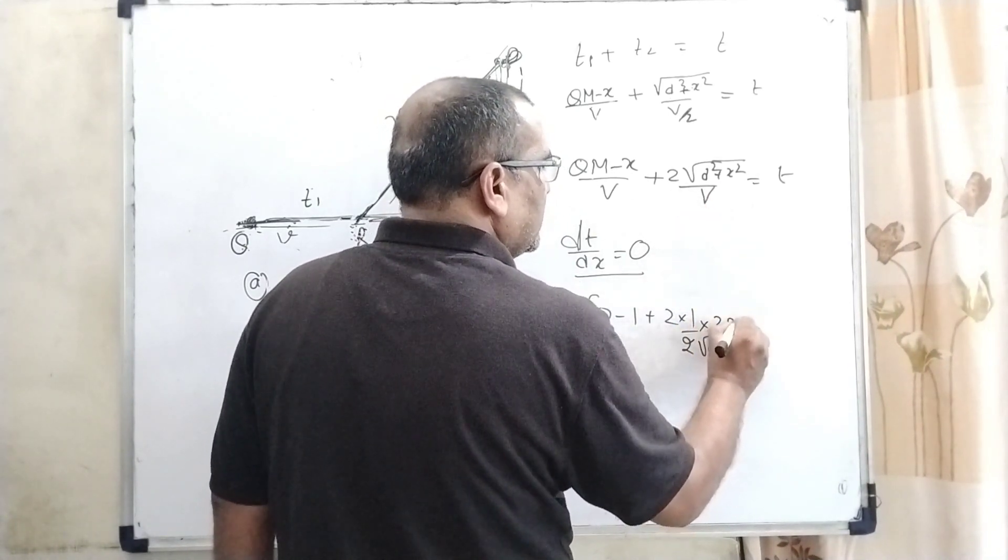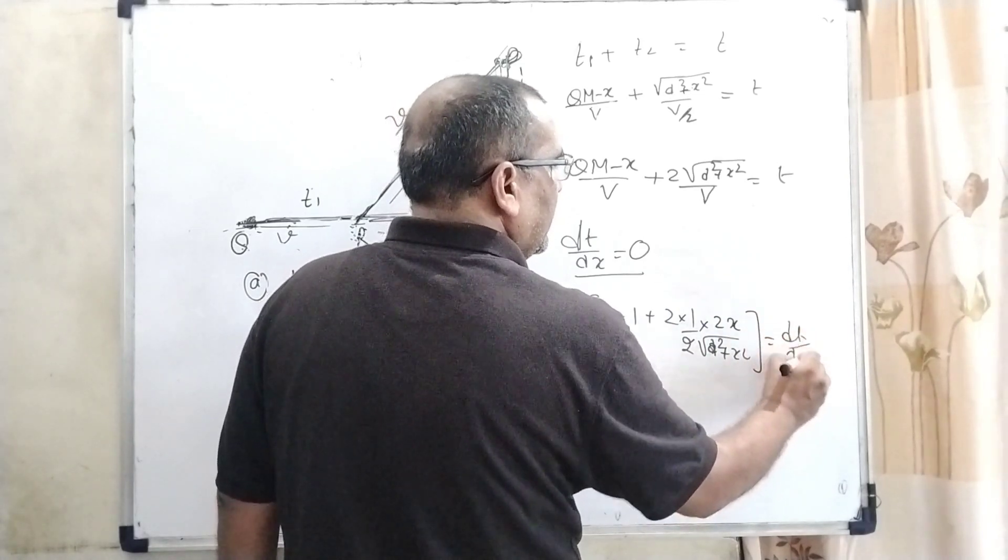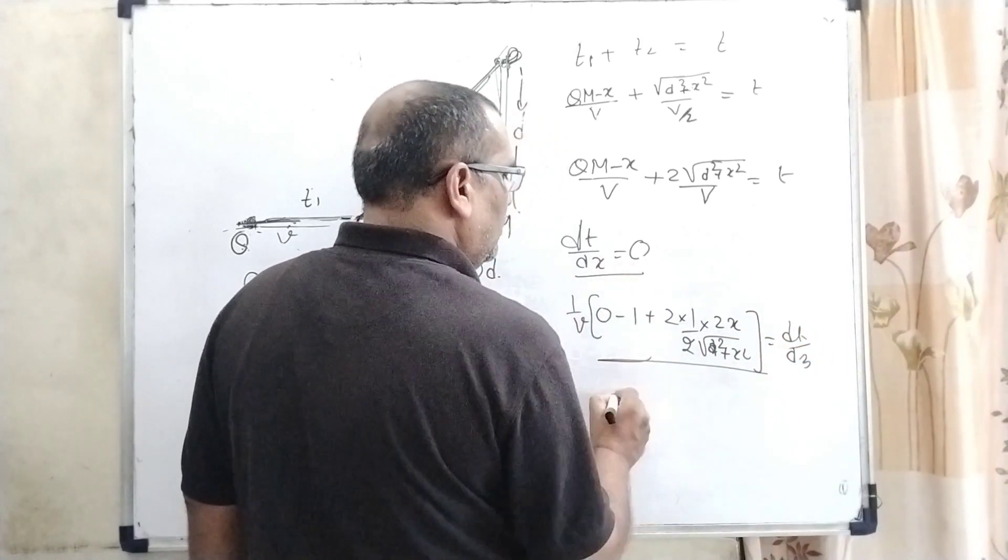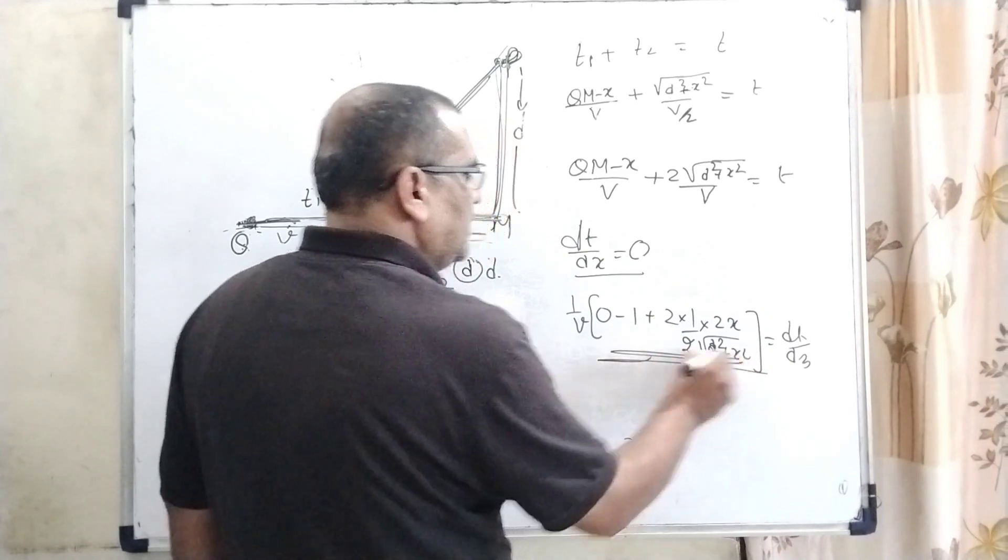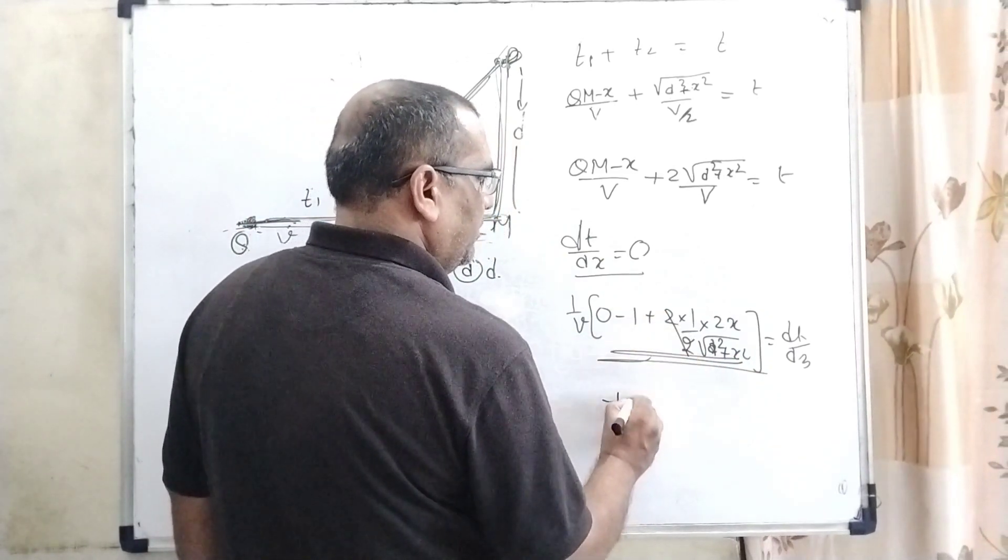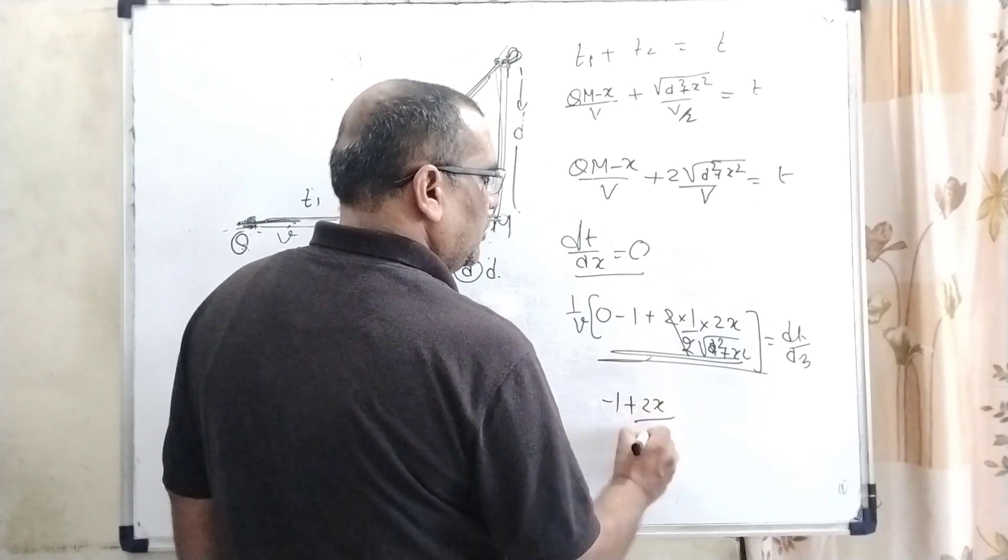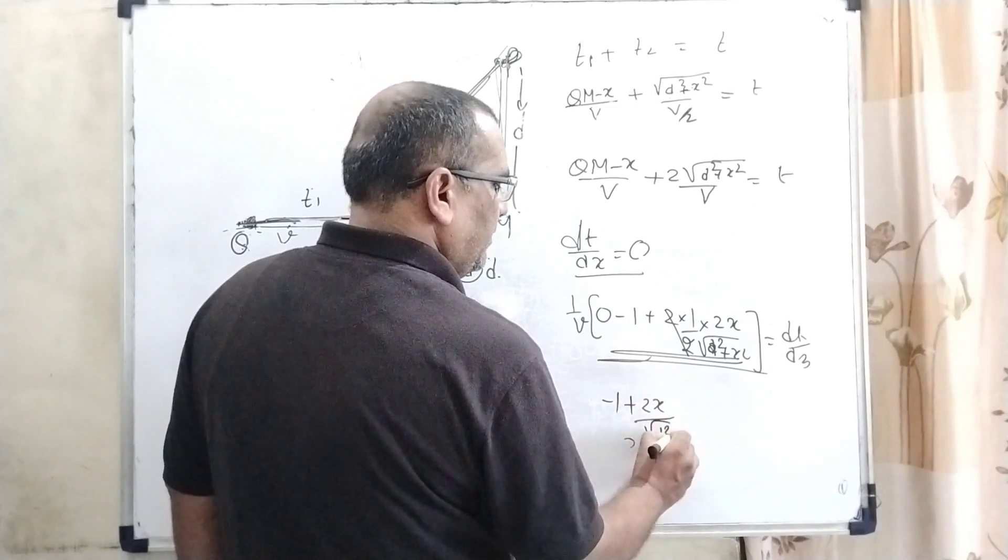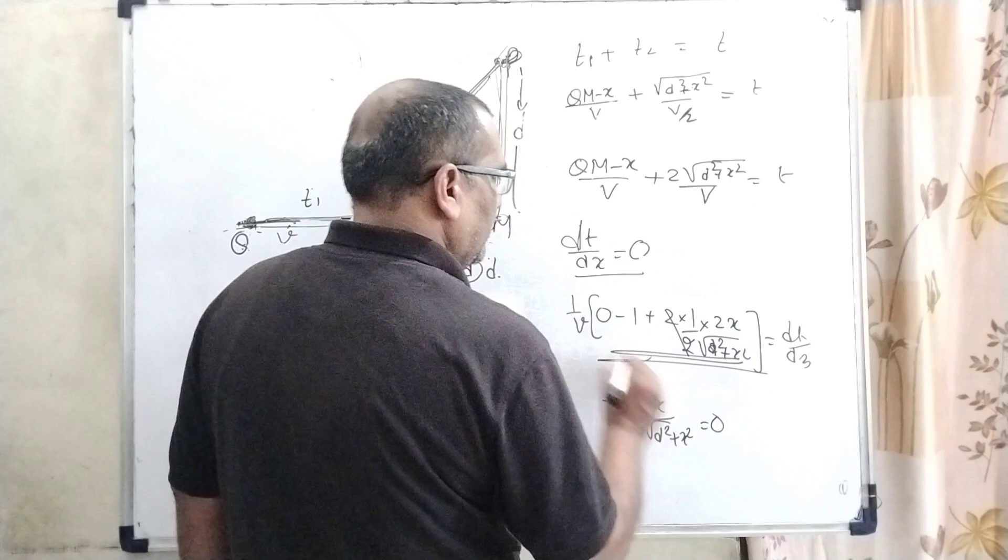But this value equals 0, which means this value equals 0. So minus 1, this 2 cancels out, plus 2x over root D square plus x square equals 0 in this condition.